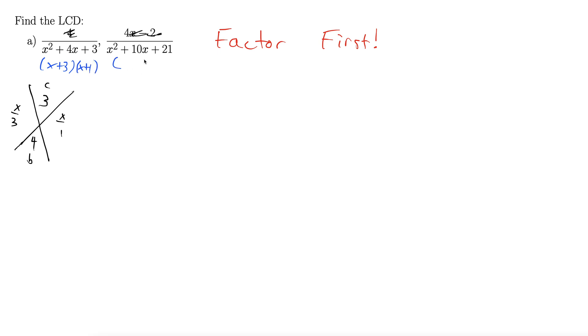Okay, over here, let's just go straight to the trial and error. x and x, we need factors of 21 that add to 10. Well, 7 and 3 do that.